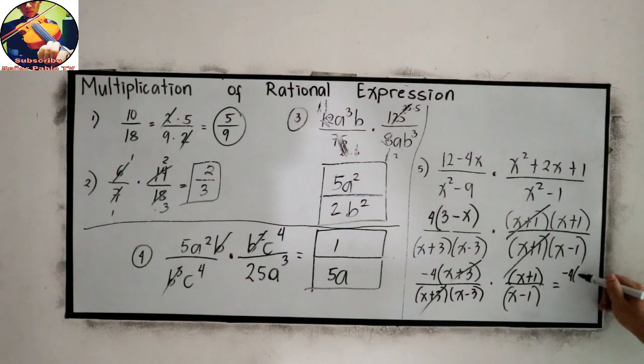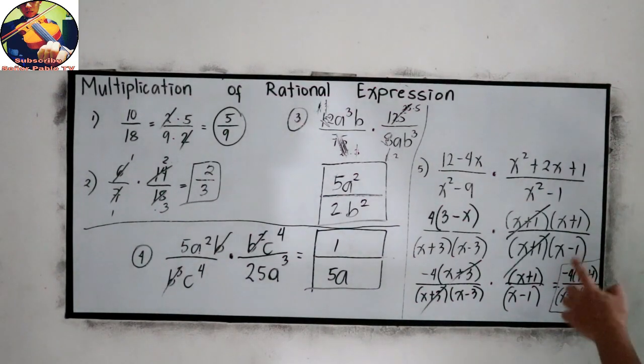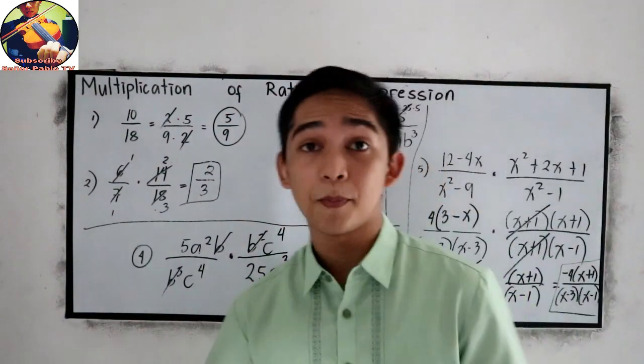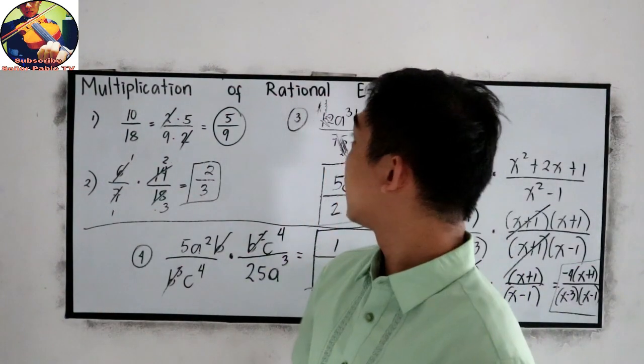This is now our final answer. But if you want to distribute or use the FOIL method, that is okay. If you want to write your final answer in this form, it is also okay. So that is the multiplication of rational expressions.